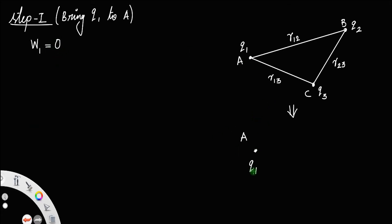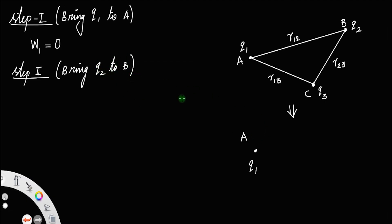Keeping the charge q1 fixed, we have to bring the charge q2 — that is step 2: bring q2 to the point B. Remember, if you bring the charge q2 to the point B, you do not have to disturb q1. But to bring q2 to point B, you have to confront the charge q1 because q1 provides a field at point B.